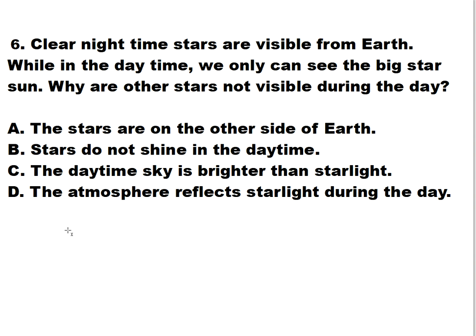Question six: on clear nights, stars are visible from Earth, while in the daytime we only see the Sun. Why are other stars not visible during the daytime? Is it A: the stars are on the other side of Earth, B: stars do not shine in the daytime, C: the daytime sky is brighter than starlight, or D: the atmosphere reflects starlight during the day? The answer is letter C — the daytime sky is a lot brighter than starlight because the Sun is super bright.